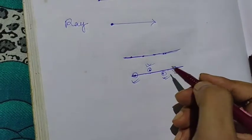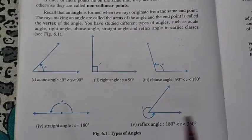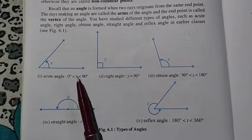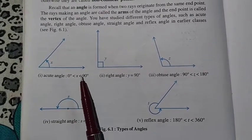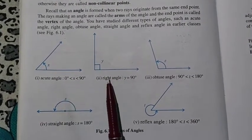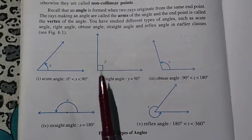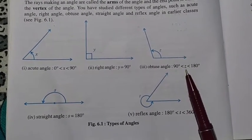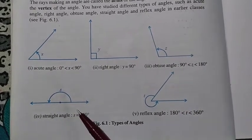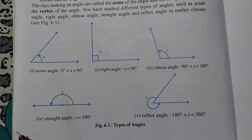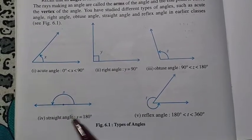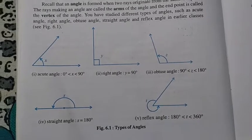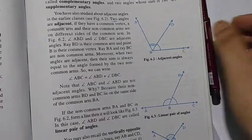Here you can see some angles. Let us assume that angle is x. If x is greater than zero and less than 90 degrees, that angle will be called an acute angle. If an angle is exactly 90 degrees, it will be called a right angle. If an angle is greater than 90 degrees but less than 180 degrees, it will be called an obtuse angle. If an angle is greater than 180 degrees but less than 360 degrees, that angle will be called a reflex angle.